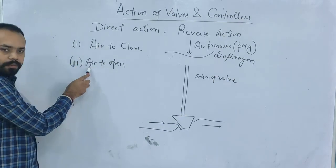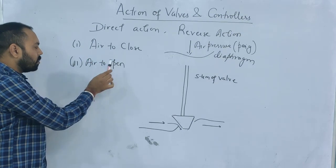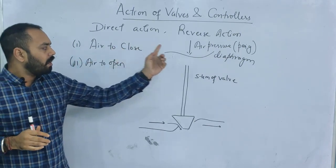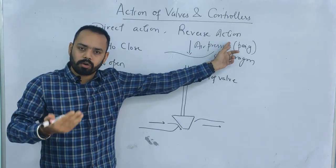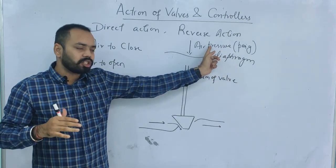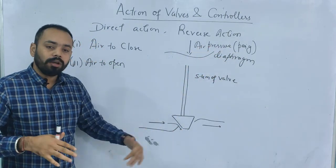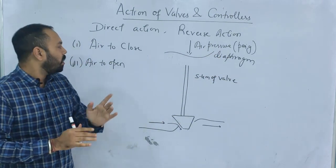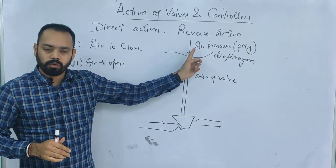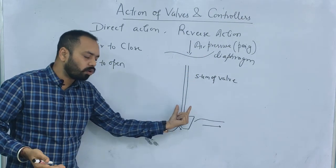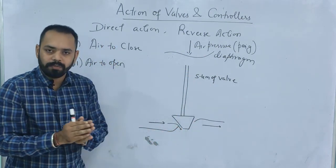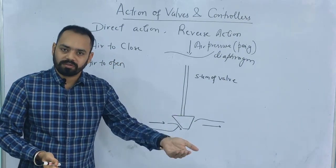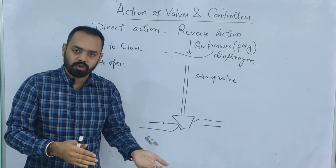What does 'air' mean here? Air stands for the air pressure coming to the valve from the controller. The controller output is converted into the corresponding air pressure and it serves as the input of the valve. Air-to-close means: as the pressure coming from the controller to the valve increases, the valve will be closed. As the air pressure increases, the stem shifts downwards, the opening decreases, and the flow decreases.